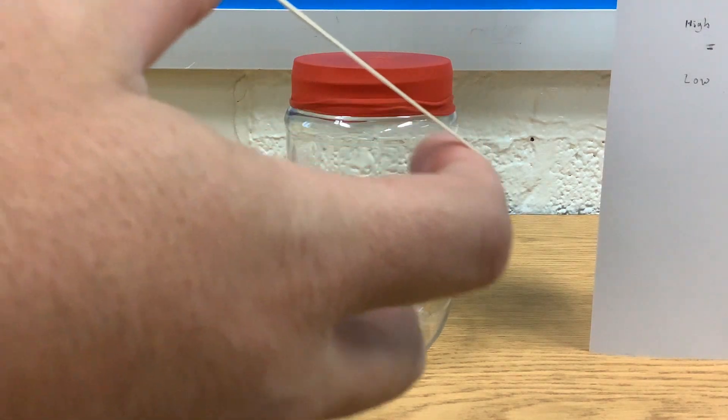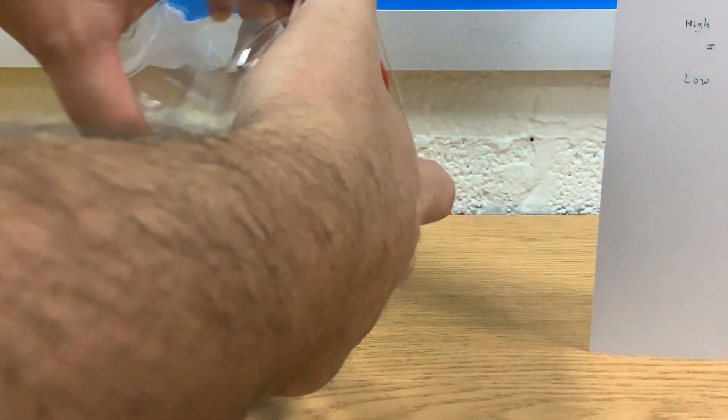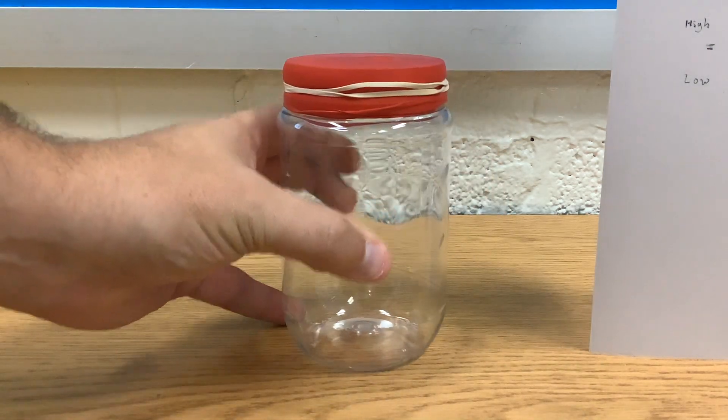And just to make sure that balloon doesn't come flying off of there, we're going to take our rubber band, and we're going to stretch it around and hold that balloon in place even more.